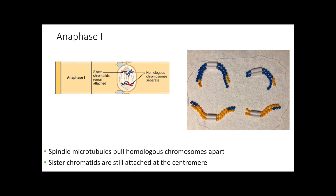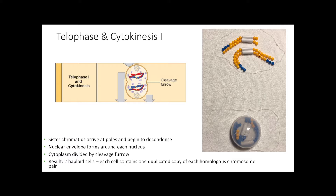In prophase I crossover happens and we get new genetic information swapped. In prometaphase the spindle fibers attach. In metaphase — the law of independent assortment — those genes fall right or left on the equator. Then in anaphase I, the homologous chromosomes are pulled apart and start to go towards the poles. In telophase I, those homologous chromosomes have gone towards the poles, we start to cover them with the nuclear membrane again, break off and dissolve the spindle fibers, and our end result is two daughter cells at the end of telophase and cytokinesis I.